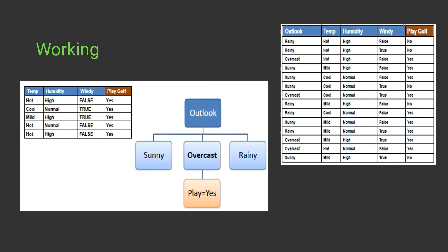We have prepared our tree with a split on outlook. Outlook has three branches: sunny, overcast, and rainy. In the case of overcast, you can clearly see that every overcast entry has a yes value. So overcast leads directly to yes — if outlook is overcast, a player can definitely play golf, and we need not look at the remaining three parameters. This is what gain means: outlook is a very strong parameter for prediction.